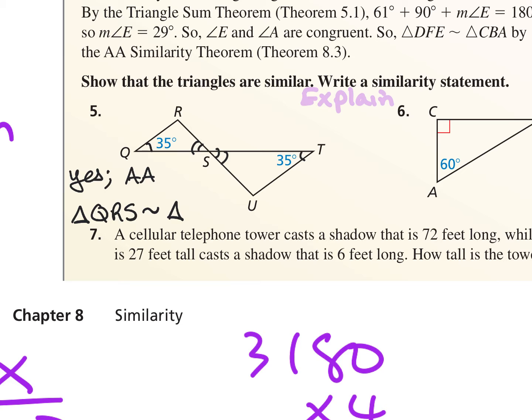The similarity statement: QRS is similar to... Q had 35 degrees, so I match it with T which also has 35. My second angle was R — I match it with U, since R and U had no special markings. Then S matches with the remaining vertex. The similarity statement would be triangle QRS ~ triangle TUV, and the reason is angle-angle.